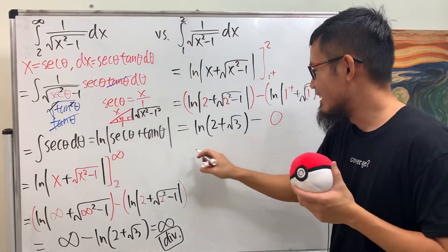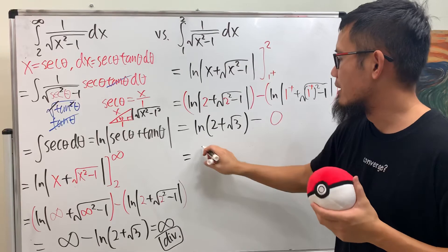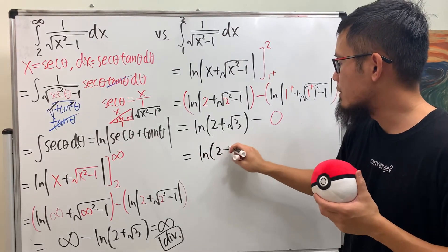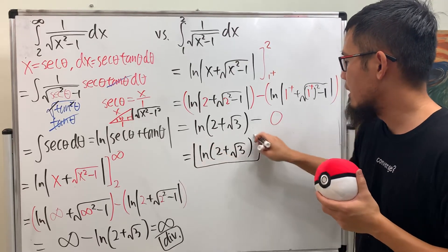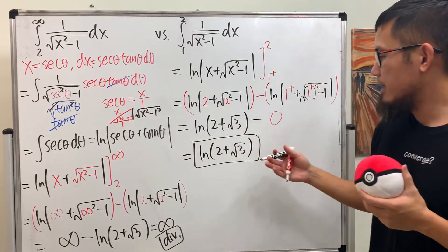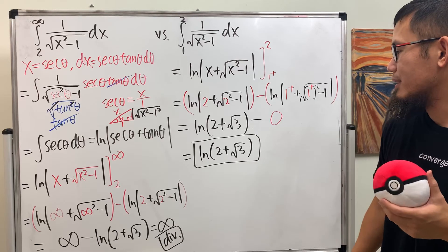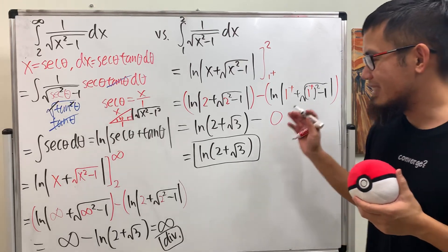Very nice. So finally, this right here converges, and it converges to ln of 2 plus square root of 3. When we have a finite number, that will be your answer. That's it.